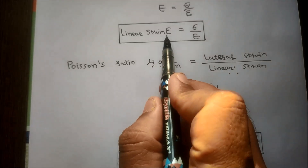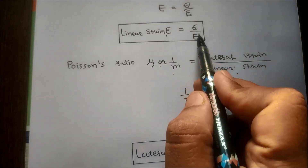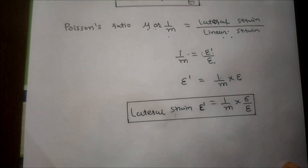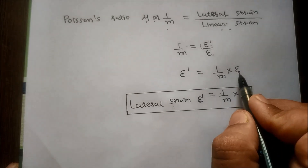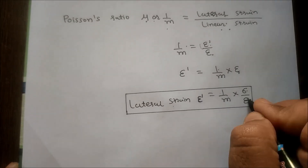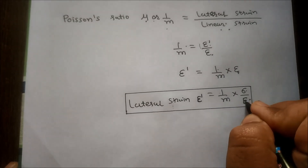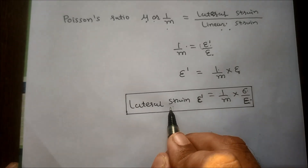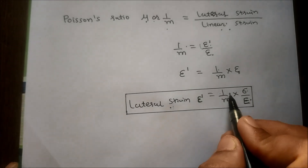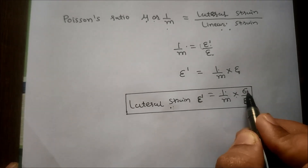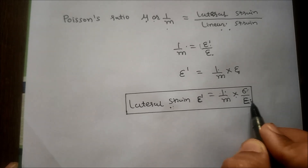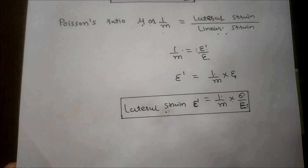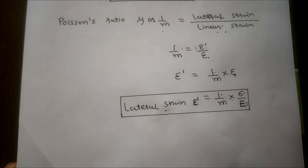The equation for linear strain is sigma by E. So the equation for lateral strain is (1/m) multiplied by sigma divided by E. Now we derive the relation between Bulk Modulus and Young's Modulus.